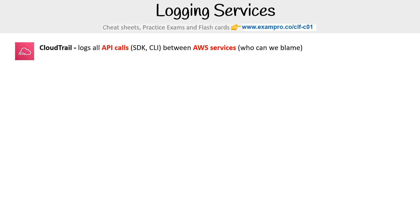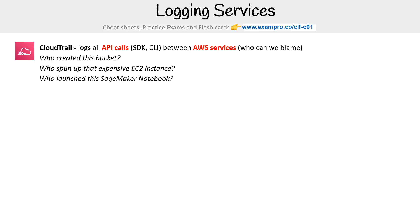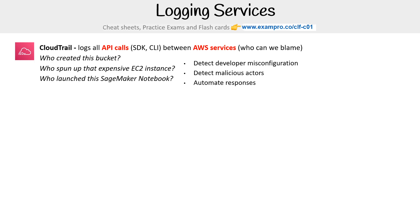This is really useful to say: who was the person that did this? Who created this bucket, who put up that expensive EC2 instance, who launched the SageMaker notebook. The idea here is you can detect developer misconfigurations, detect malicious actors, or automate responses through the system.